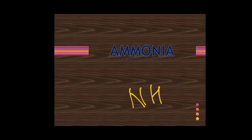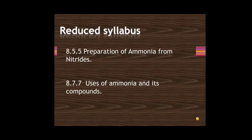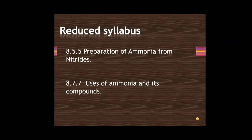Let's start with the next topic: ammonia. Ammonia is the second compound we will study under inorganic compounds. It is basic in nature, its formula is NH3, and it is a gas. The reduced syllabus from this topic is 8.5.5 from Understanding Chemistry APC book and 8.7.7, that is uses of ammonia and its compounds.